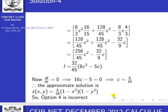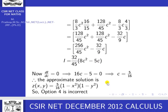By the Ritz method, we set dI/dc = 0 for the stationary point. Differentiating I with respect to c: 16c − 5 = 0, giving c = 5/16.